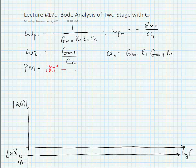We expect that the omega p1 is going to be dominant and it's a left half plane pole so it will have a minus arc tangent of omega divided by omega p1.